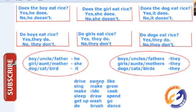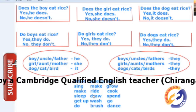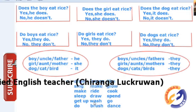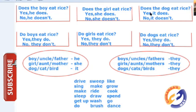For the girl, we use 'she'. Does the girl eat? Yes, she does. No, she doesn't. Does the girl make? Yes, she does. No, she doesn't. Does the girl write? Yes, she does. No, she doesn't. Does the girl draw? Yes, she does. No, she doesn't. Does the girl wash? Yes, she does. No, she doesn't. Now let's move to an animal — a dog.